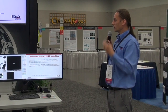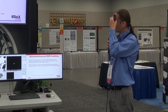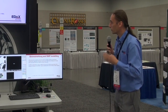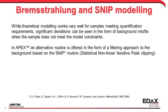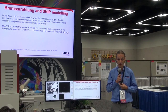The Bremsstrahlung model is a theoretical model that works very well when you meet the ideal conditions — when the sample is flat, polished, and all of that. If it is not, you will see significant deviations in the background model as misfits, and that basically means don't click the button. You have bad data; the sample doesn't meet the requirements of the quantification model.